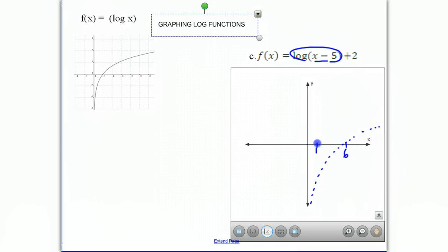If we now want to move the graph up 2 units, we take the x-intercept here at 6. We know it's going to move up 2 units to 2. We don't know where it's going to cross the x-axis, but it's going to look something like that. This is going to be the graph of y equals the log of x minus 5 plus 2.